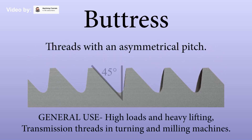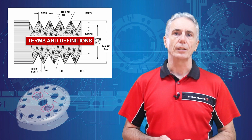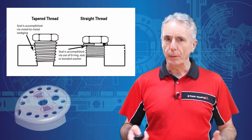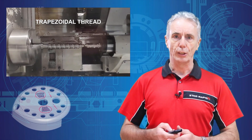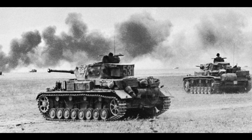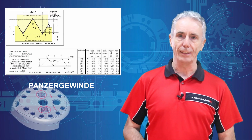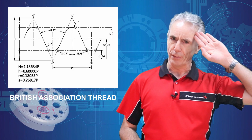In fact, there are all sorts of really weird thread forms out there, such as tapered threads, knuckle threads, trapezoidal threads, German buttress threads, Panzergewinde, and British association threads.